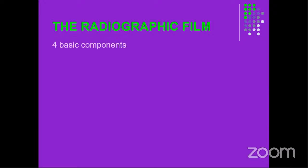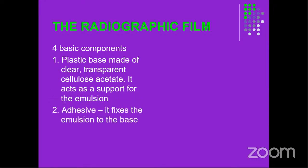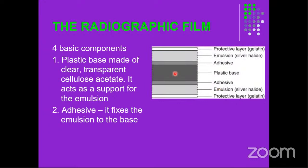Now we focus on the radiographic film itself. It is very thin but has various components — four basic components. It has a plastic base made of clear, transparent cellulose acetate which acts as a support for the emulsion. Then there is an adhesive which fixes the emulsion to the base. In the diagram, in the middle you can see the plastic base, then the adhesive on both sides, then the emulsion on both sides consisting of silver halide crystals.